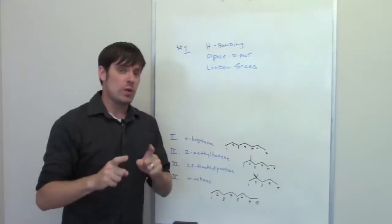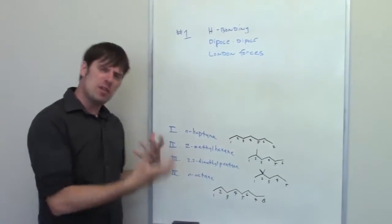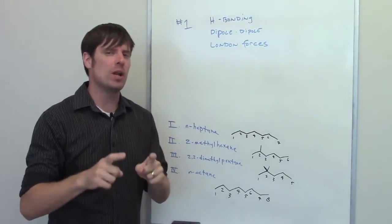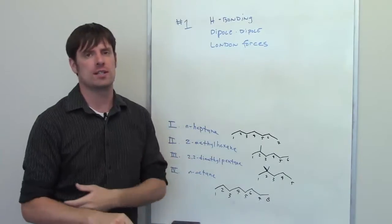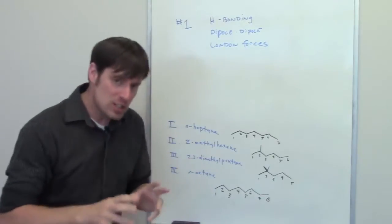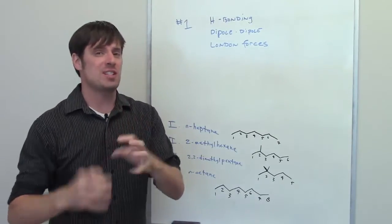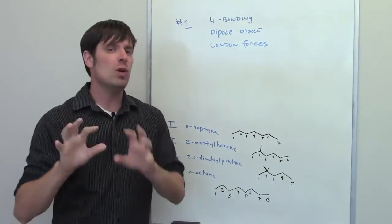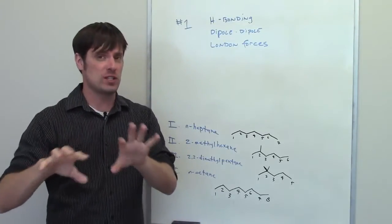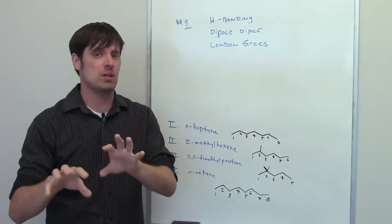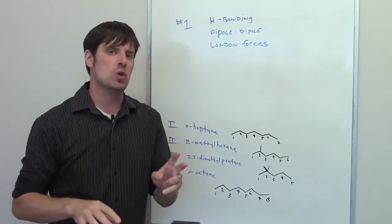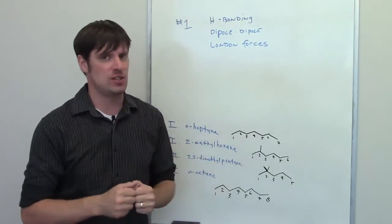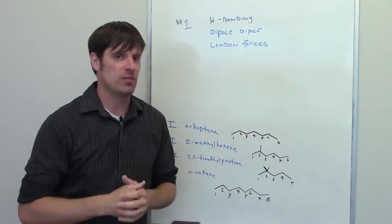In this question we are given a few different molecules and we're asked to sort them according to boiling point from highest to lowest. In order to do this, there are actually two different things that we have to first consider. Number one is what kind of intermolecular forces do each of the different molecules possess? Number two, what is the size and branchiness of the different molecules?